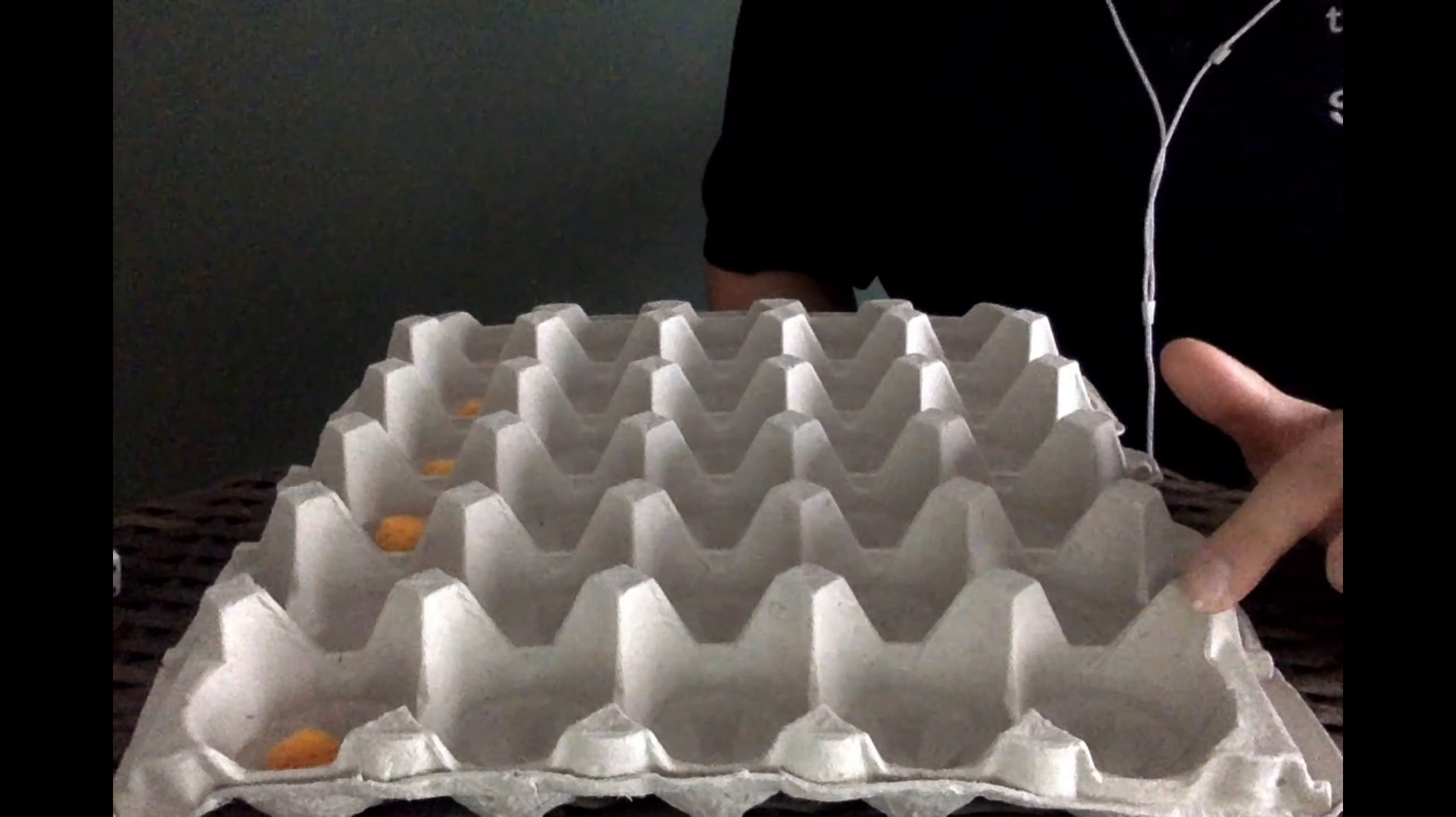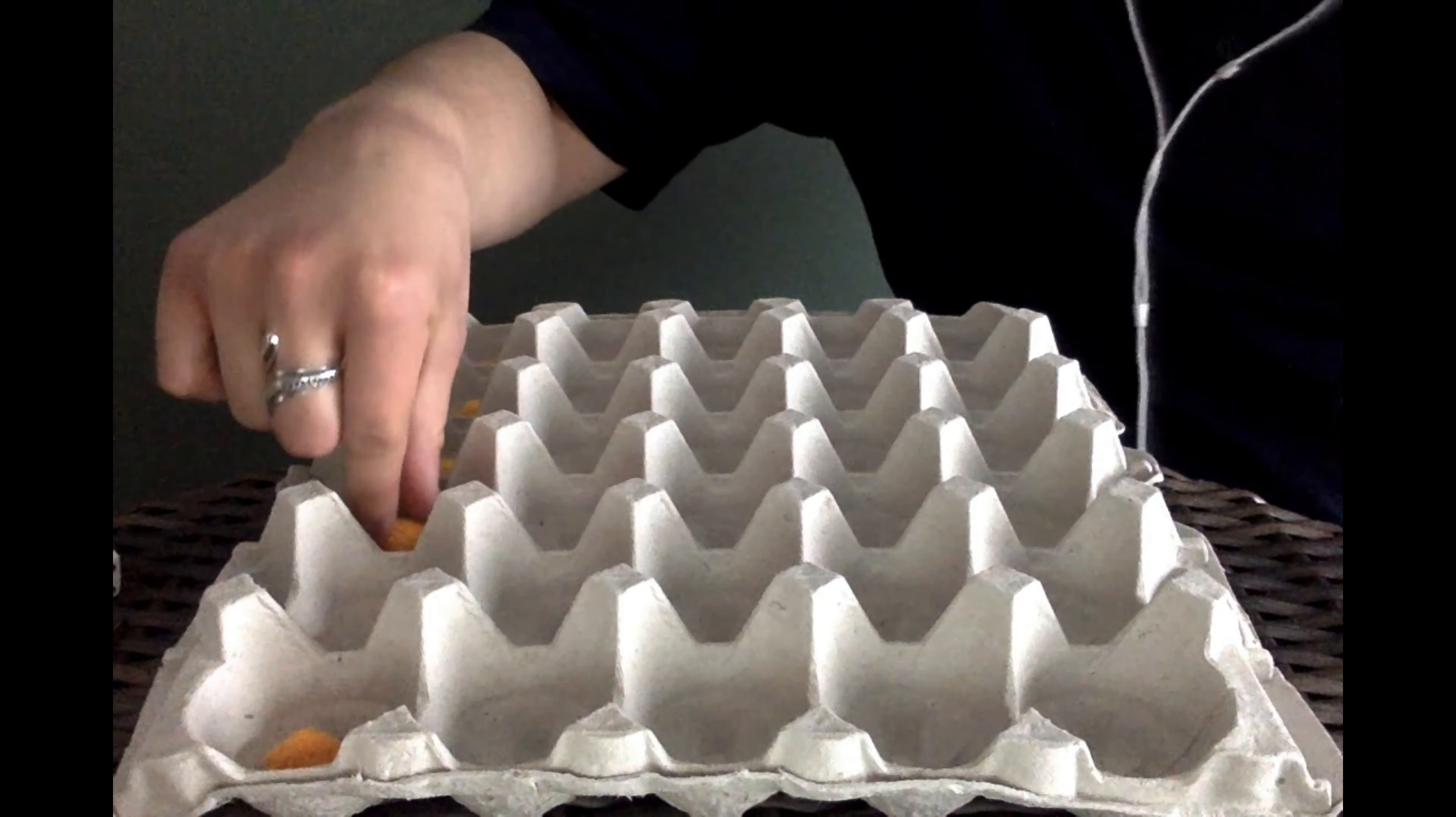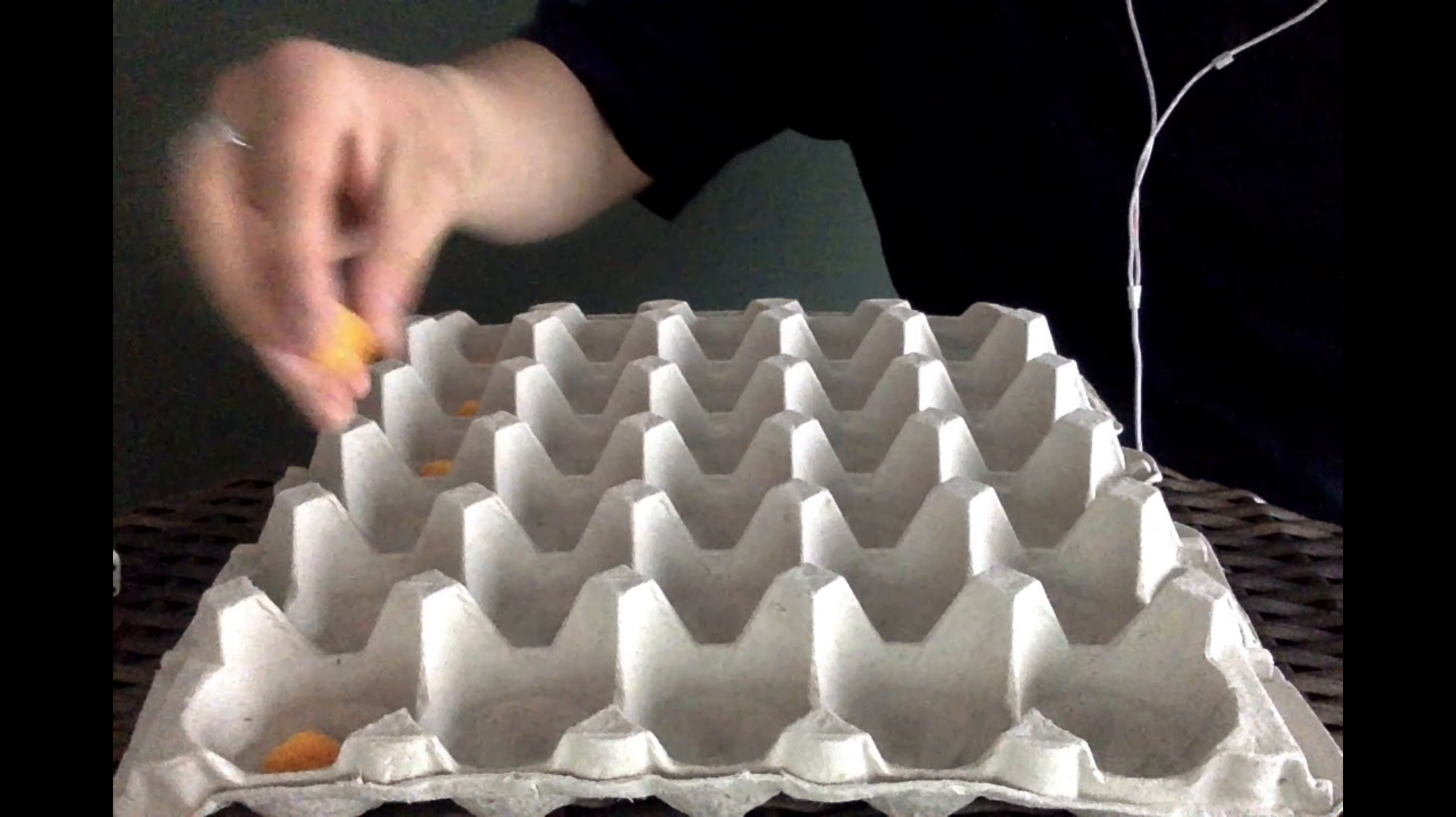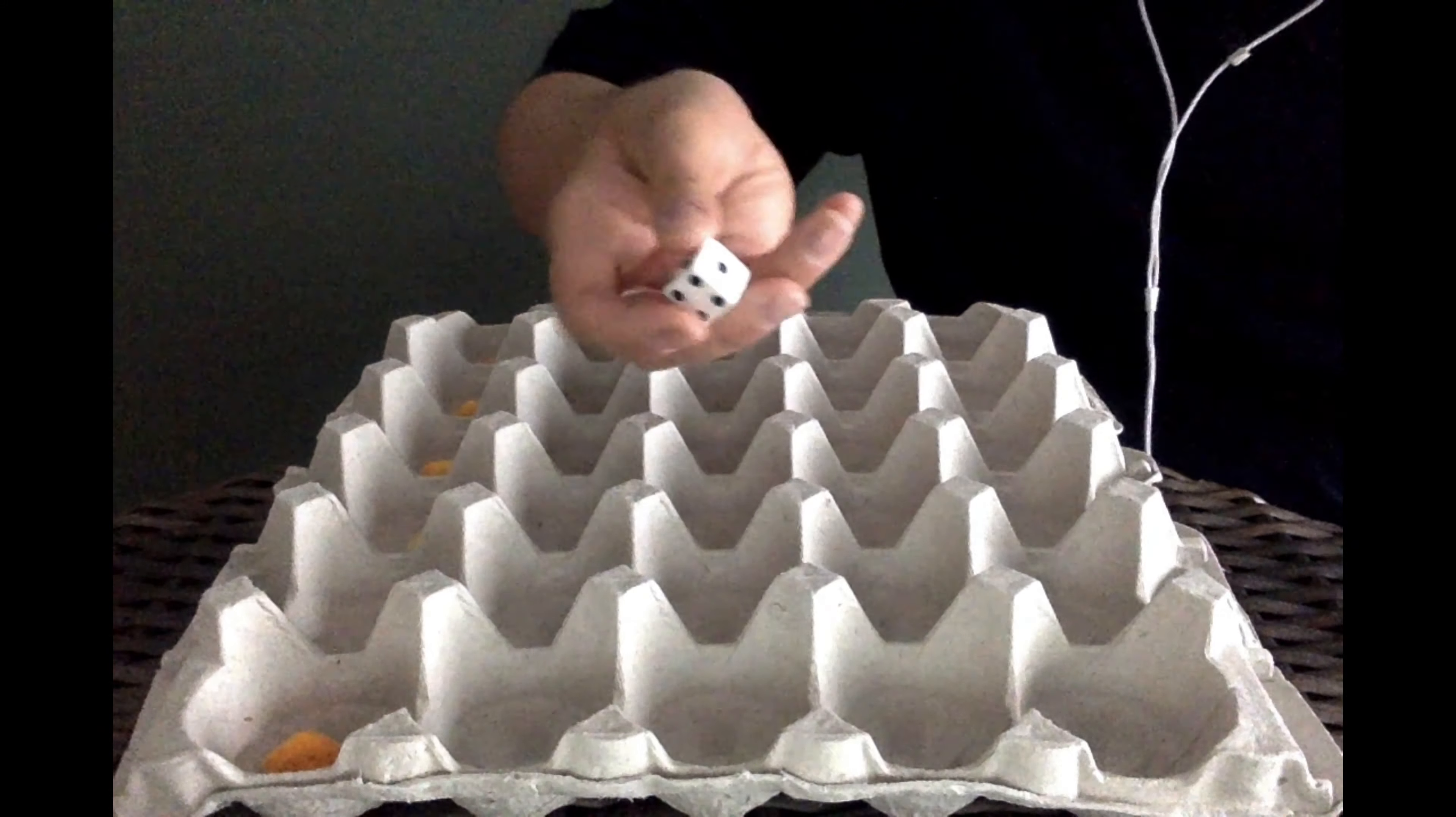So our math game today is we're going to spread pollen. To play this game, we're going to need an empty egg crate or carton, some little yellow pom-poms, a tweezer, and a dice.